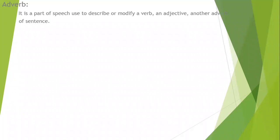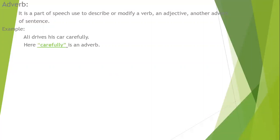Before starting our topic, let us recap what an adverb is, as you have already discussed and studied in class 4 and 5. An adverb is a part of speech that is used to describe or modify a verb, an adjective, or another adverb in a sentence. For example, 'He drives his car carefully' — here 'drive' is the verb and 'carefully' is an adverb which is modifying the verb 'drive'.